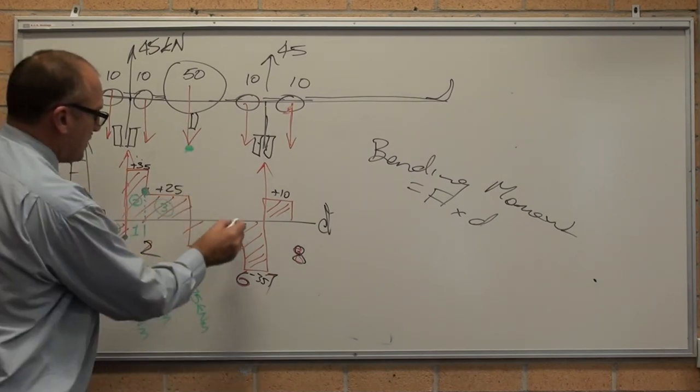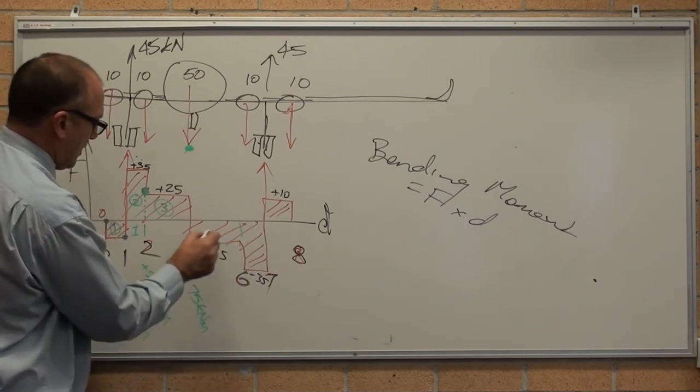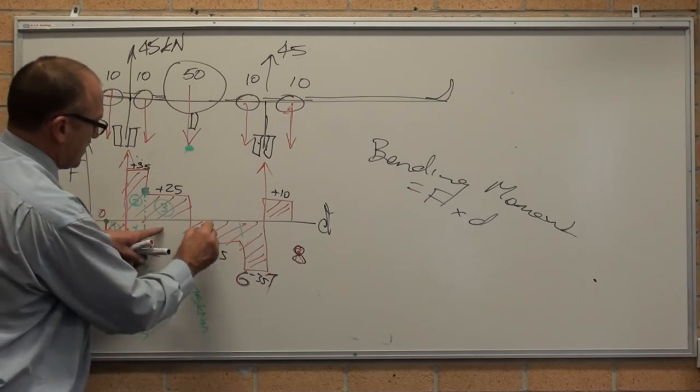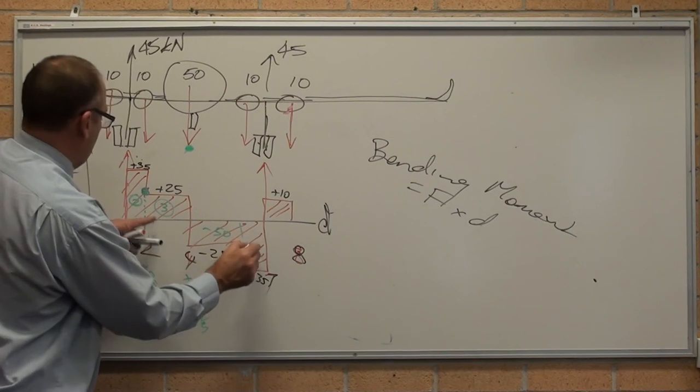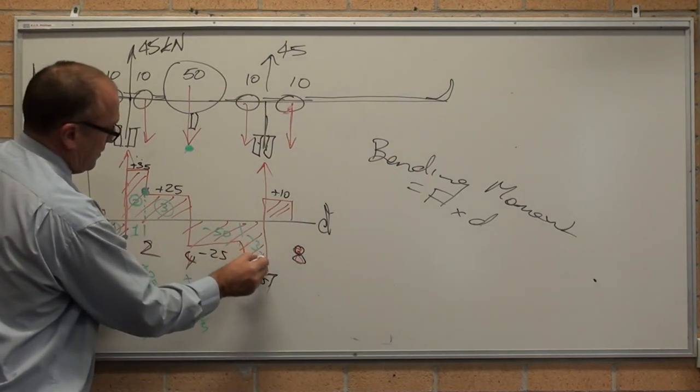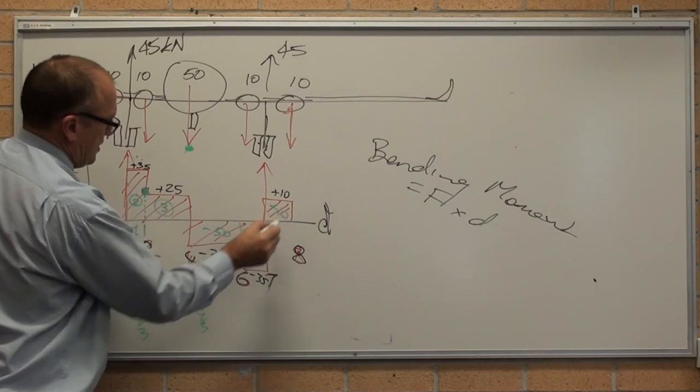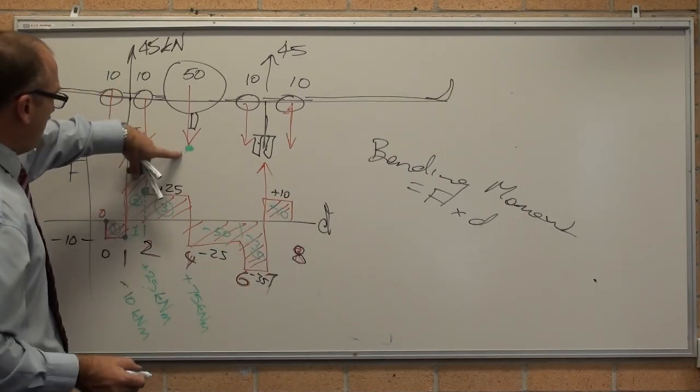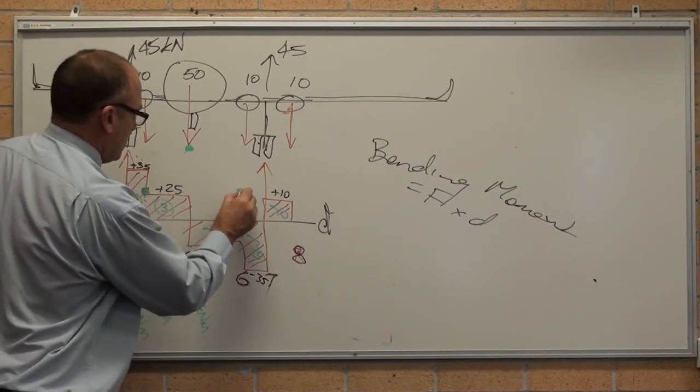Now we start obviously subtracting, and because this is symmetrical, I don't need to bother so much about the maths. That's minus 50, that's minus 35, that's plus 10. So 75 minus 50 makes it 25.